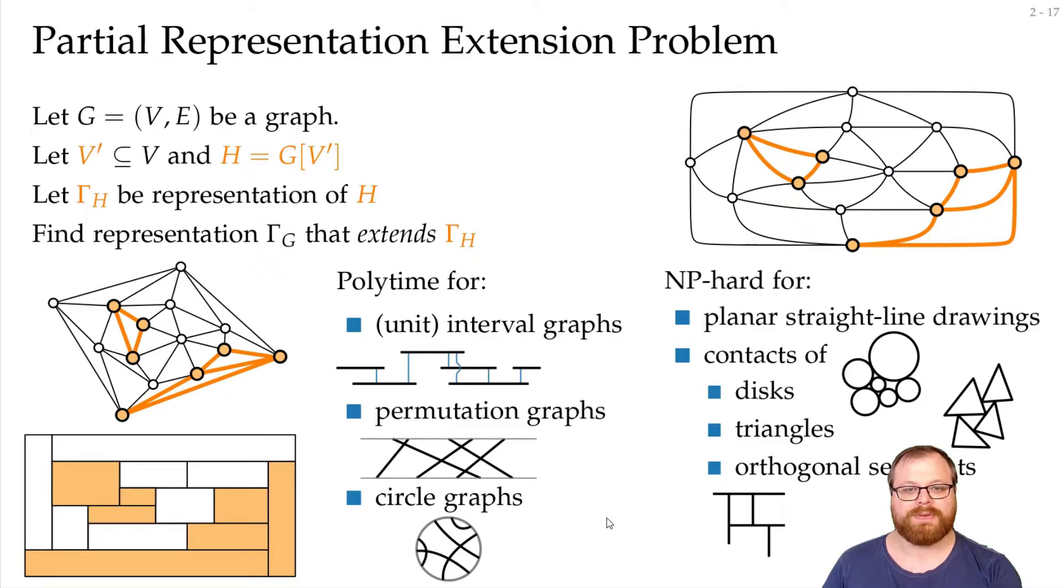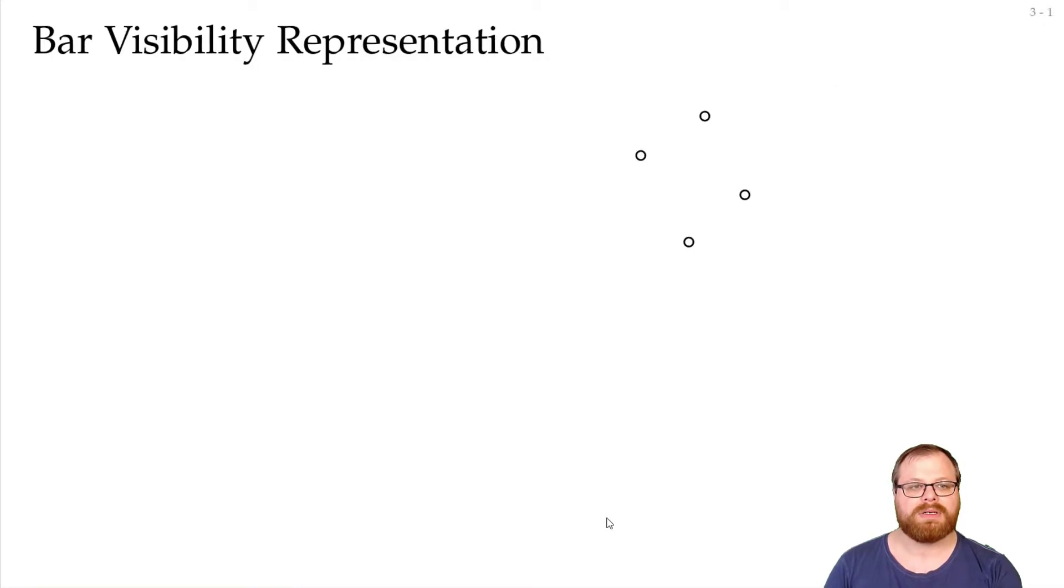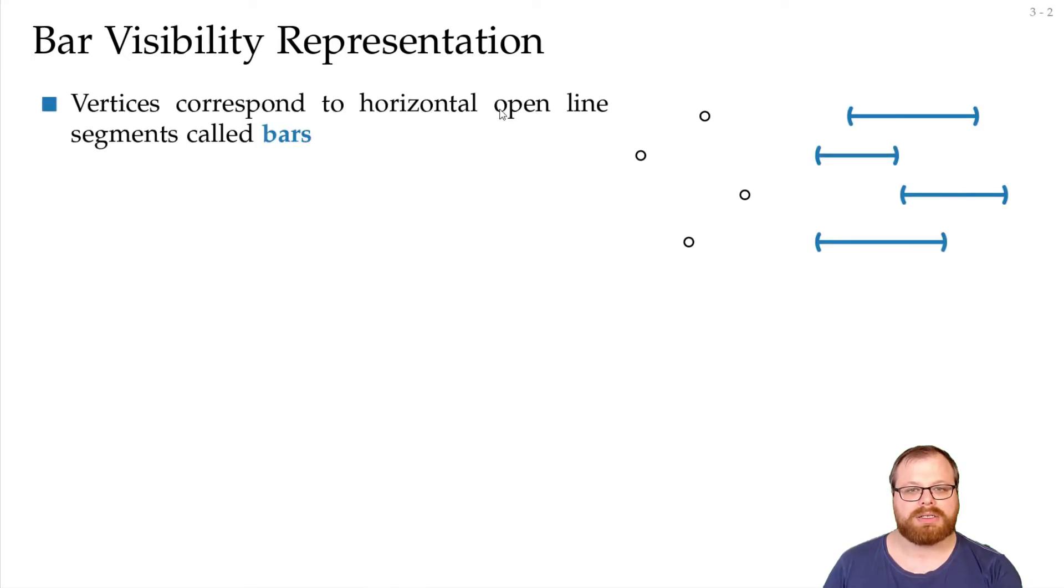In this lecture we will have a look at the representation extension problem for so-called bar visibility graphs. So let's define those. In a bar visibility representation every vertex is represented by a horizontal open line segment. Those are called bars. So they don't contain the endpoint.